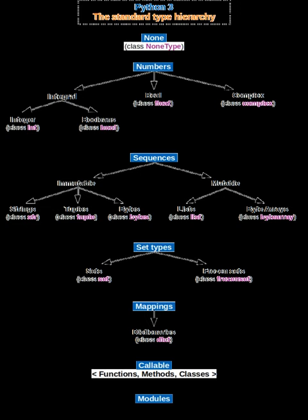Record: records are among the simplest data structures. A record is a value that contains other values, typically in fixed number and sequence and typically indexed by names. The elements of records are usually called fields or members.